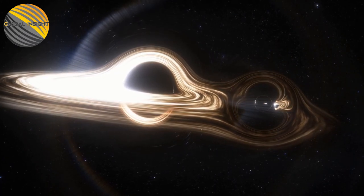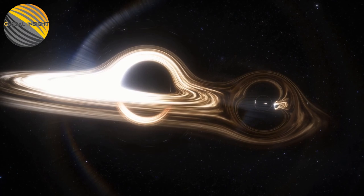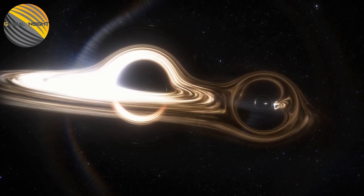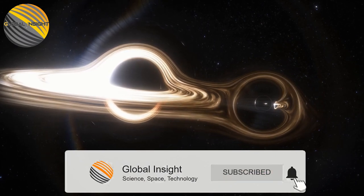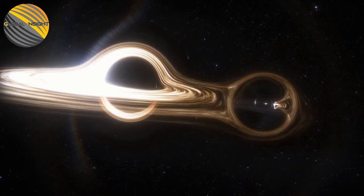Such bodies could frame when stars in a cluster crash in a chain response. A few of these IMBHs framing in a similar district could then ultimately fall together in the focal point of a galaxy and make a supermassive black hole.